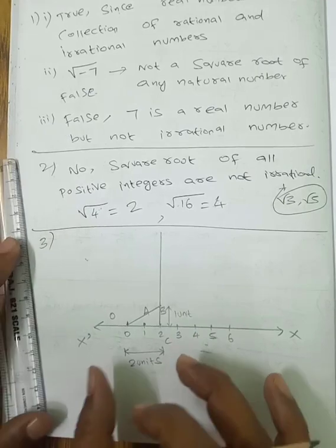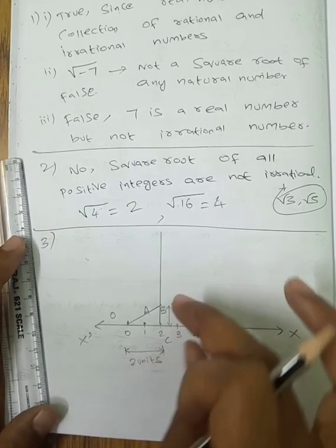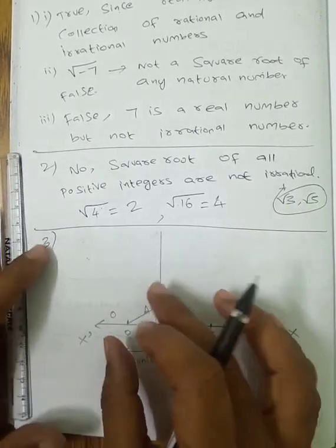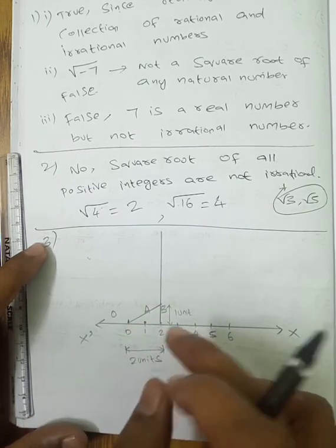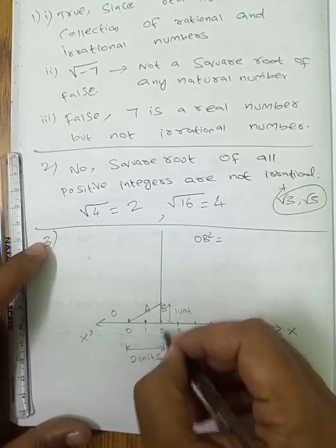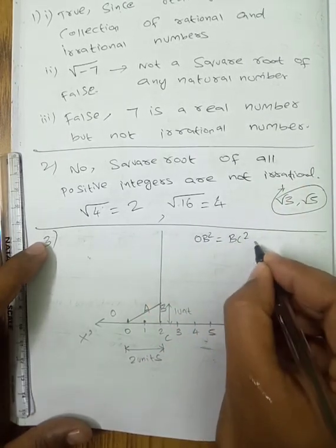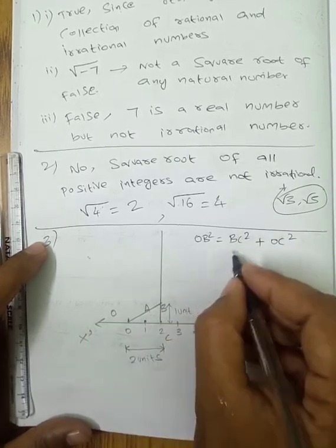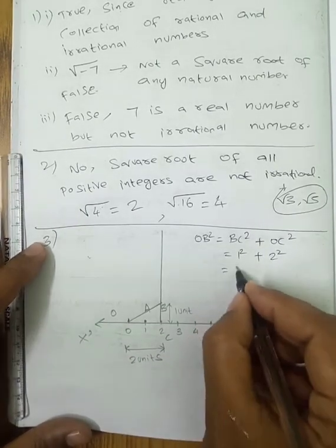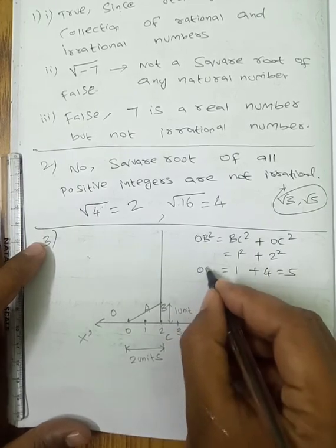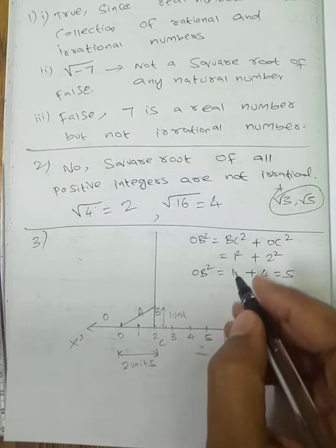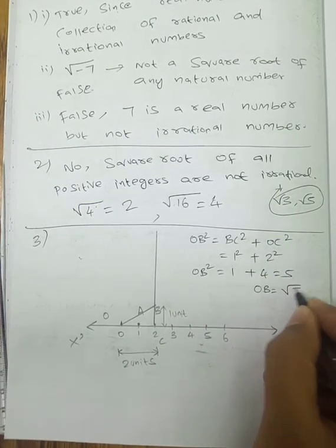Now apply the Pythagoras theorem: the hypotenuse squared equals the sum of the squares of the other two sides. So OB² = BC² + OC² = 1² + 2² = 1 + 4 = 5. Therefore OB² = 5, which means OB = √5. The slanting side OB has length √5.